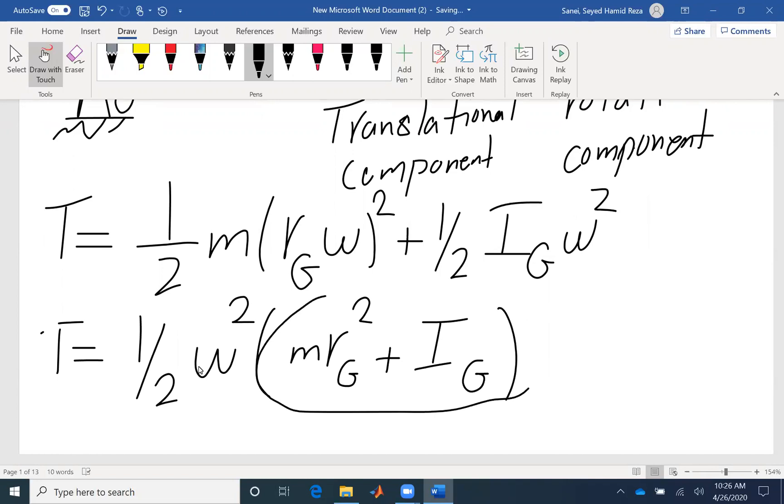So this is the definition of parallel axis theorem. So that would be IO. So my kinetic energy would be half IO omega squared.